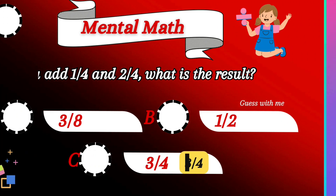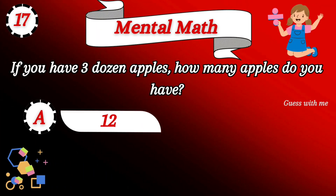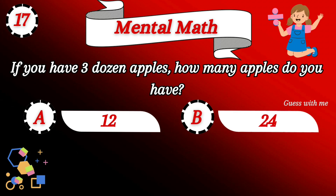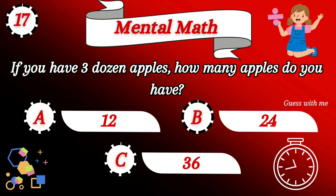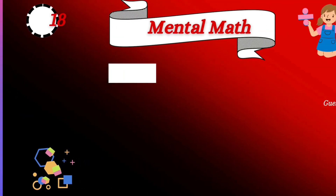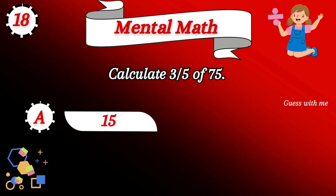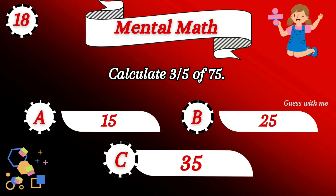If you add 1 by 4 and 2 by 4, what is the result? 3 by 4 is the right answer. Another exciting question: if you have 3 dozen apples, how many apples do you have? Calculate 3 by 5 of 75.